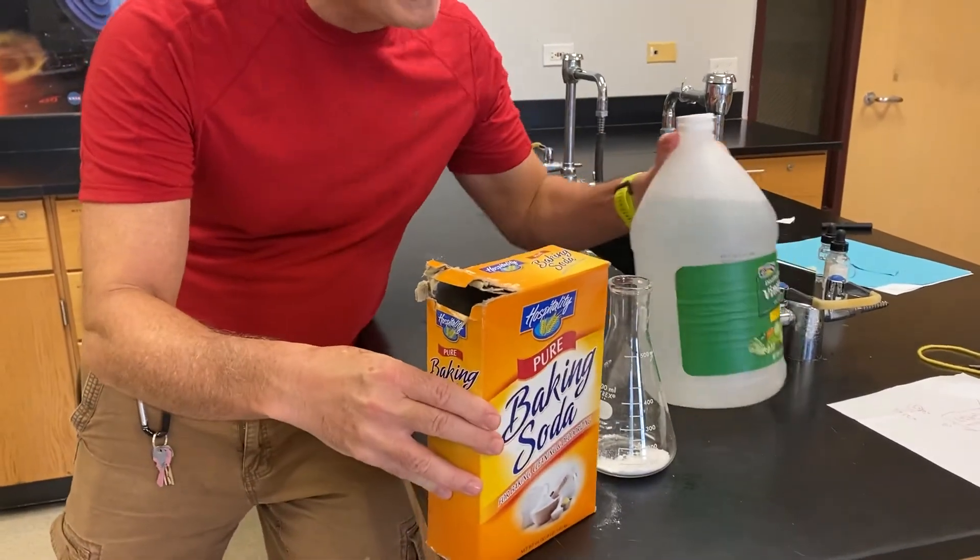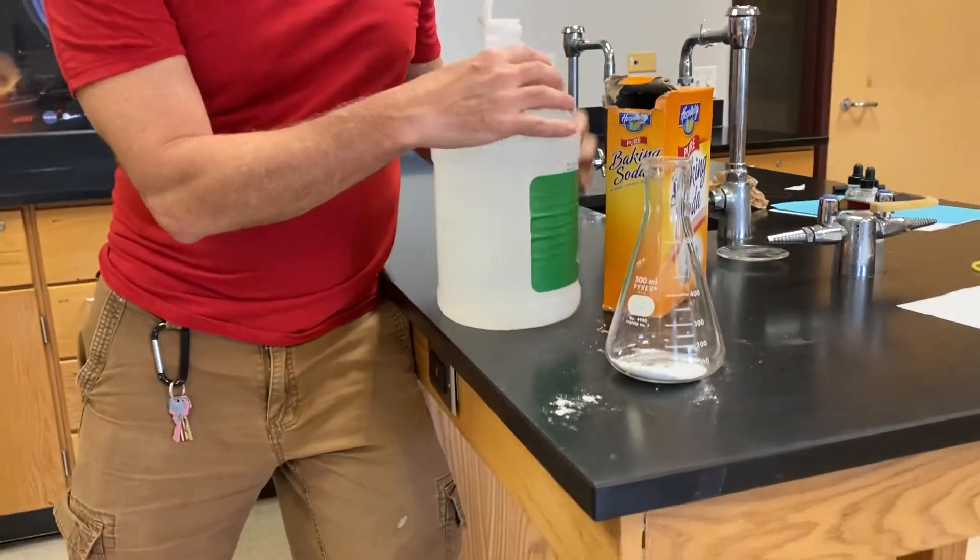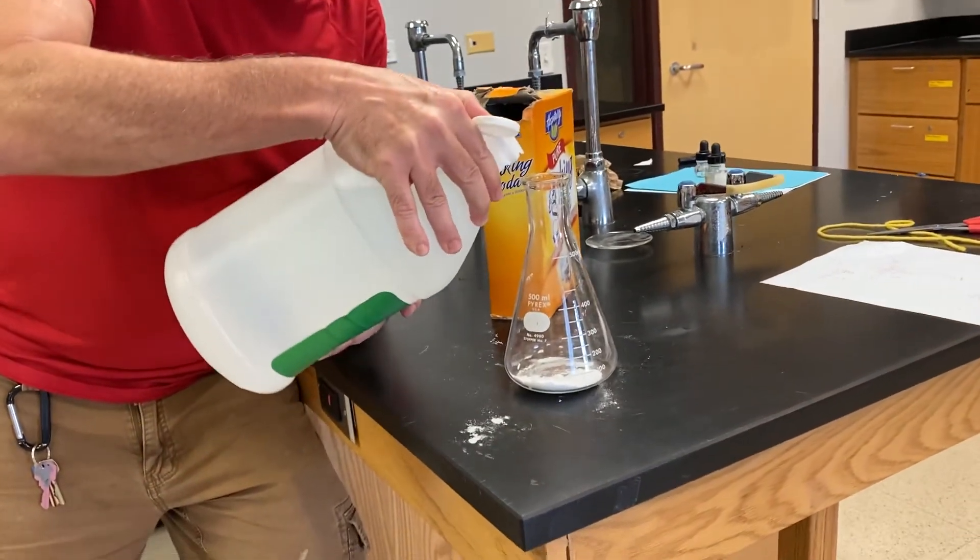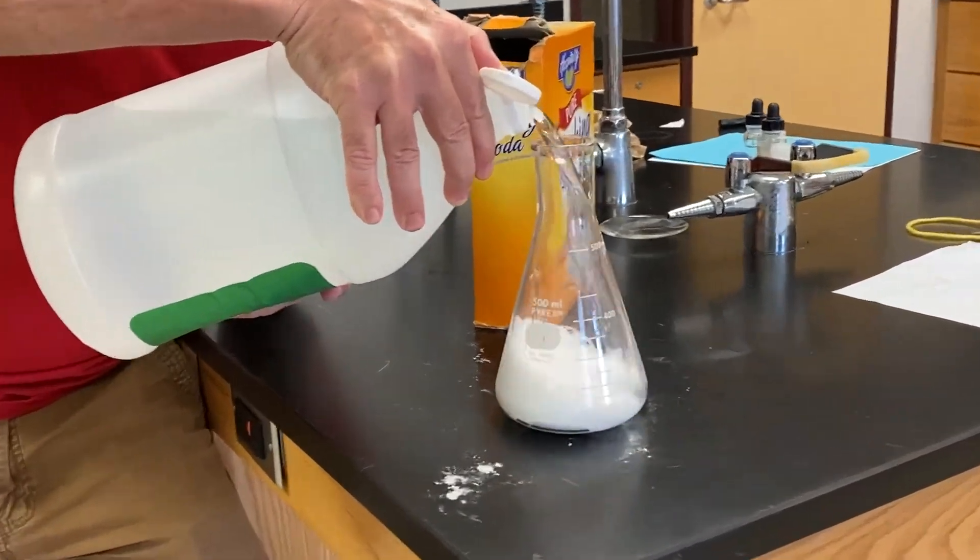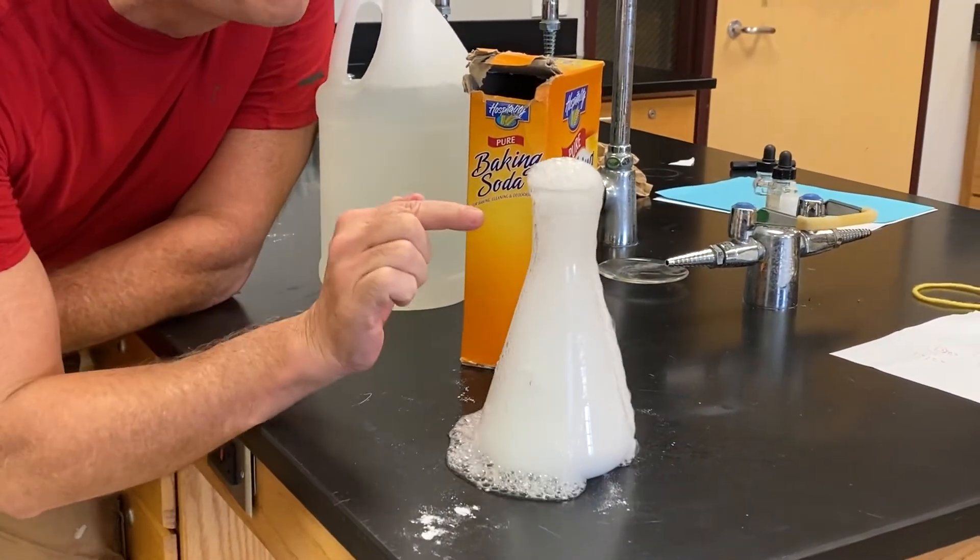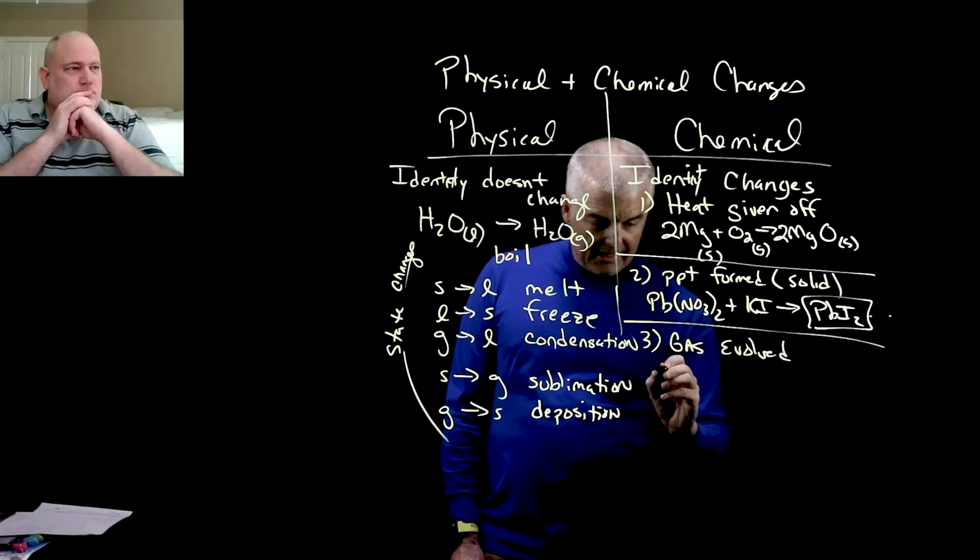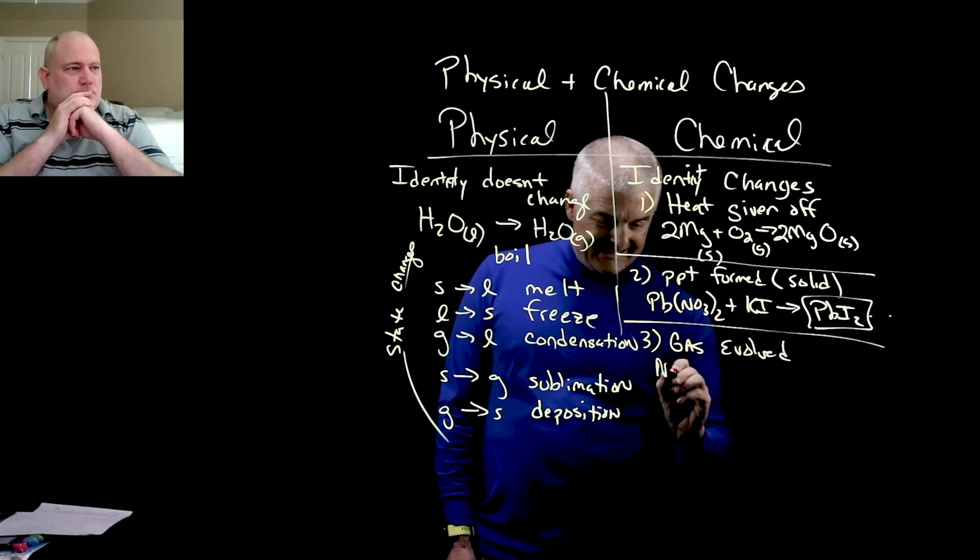Let's take a look. Another indicator of a chemical change is illustrated by me mixing baking soda and vinegar. So I've got the baking soda in the flask. I'm going to pour the vinegar in here. Whoa, look what's happening. What's happening is a gas is being given off, and as the gas is given off, that's an indicator of a chemical reaction.